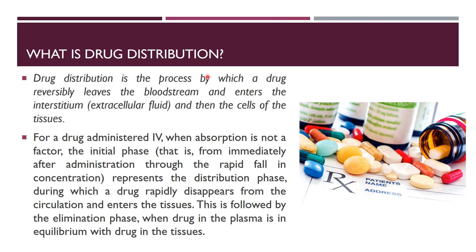What is drug distribution? Drug distribution is the process by which a drug reversibly leaves the bloodstream and enters the interstitium, extracellular fluid, and then the cells of the tissues. For a drug administered IV (intravenous), when absorption is not a factor, the initial phase — immediately after administration through the rapid fall in concentration — represents the distribution phase, during which a drug rapidly disappears from the circulation and enters the tissues. This is followed by the elimination phase, when drug in the plasma is in equilibrium with drug in the tissues.